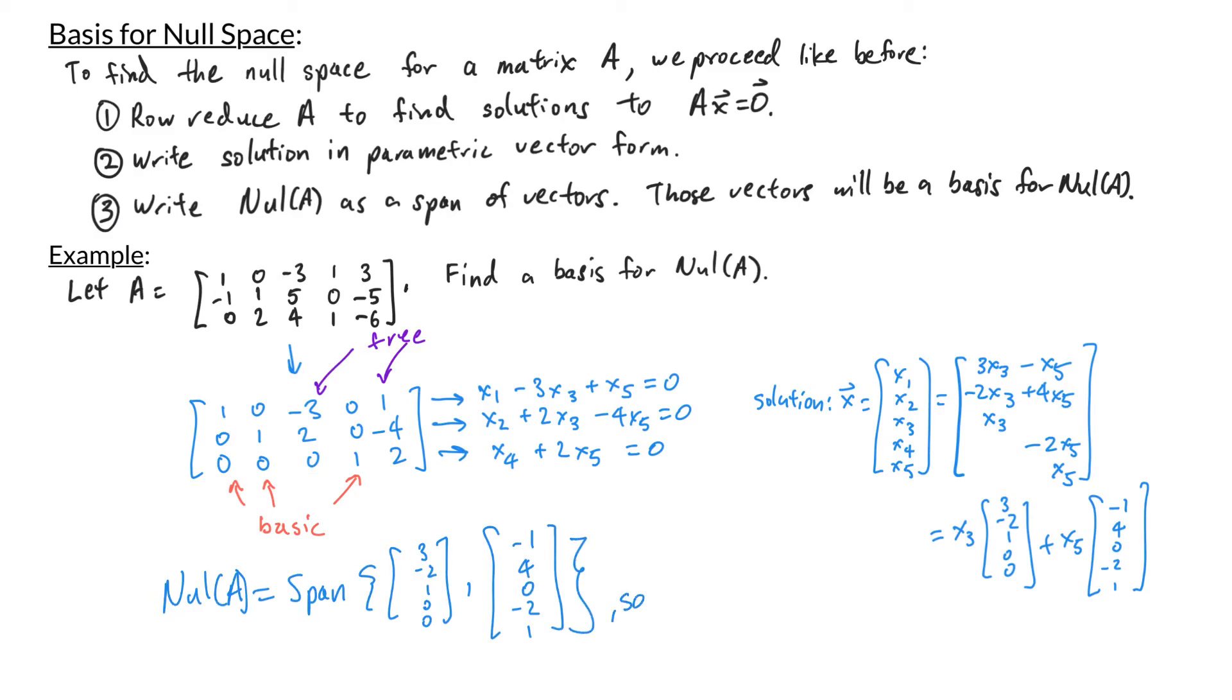So the set 3, negative 2, 1, 0, 0, and negative 1, 4, 0, negative 2, 1 is a basis for the null space of A.